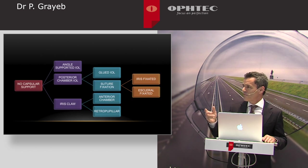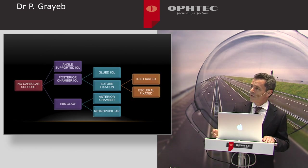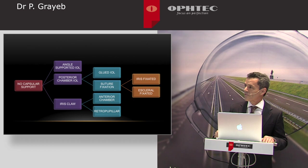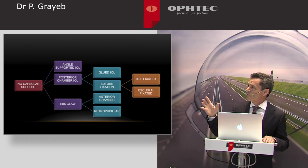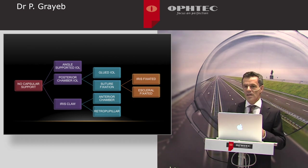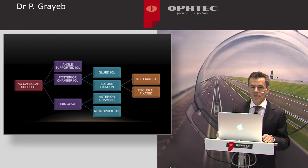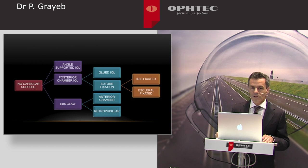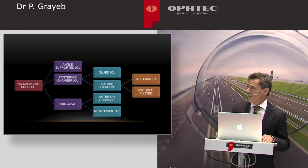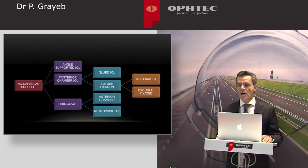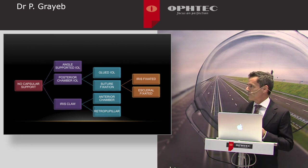As seen in this diagram, there are many alternatives for these cases. They are the angular support lenses, whose use has virtually ceased as they can lead to severe complications like corneal decompensation due to progressive endothelial cell loss, pupillary block glaucoma, dyscoria, and other complications.